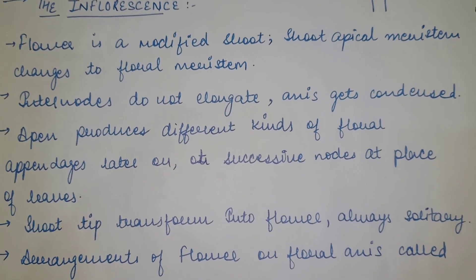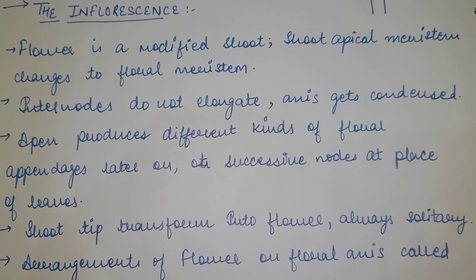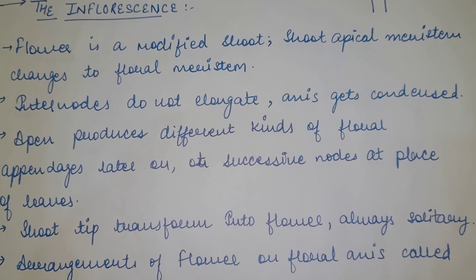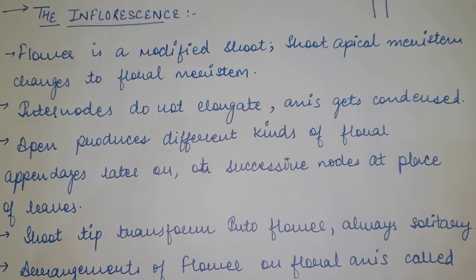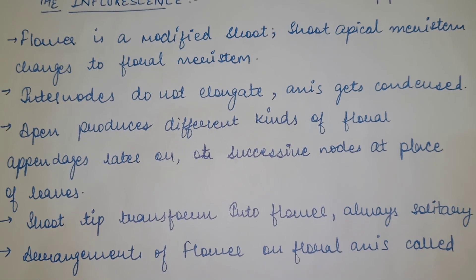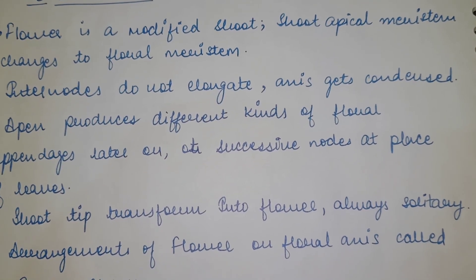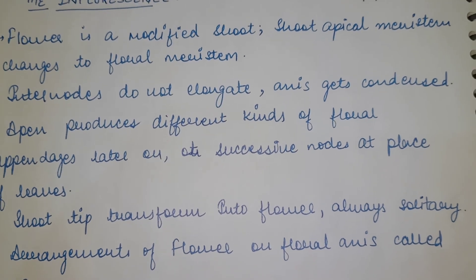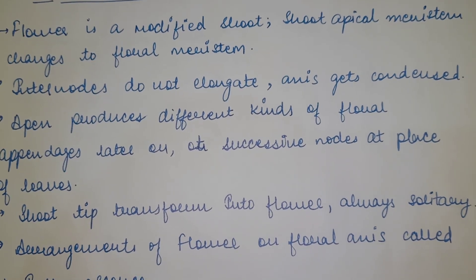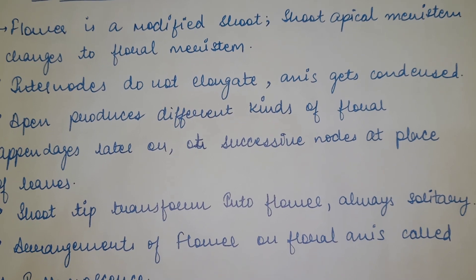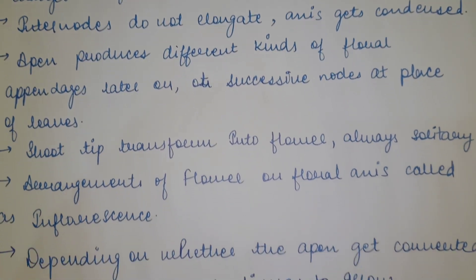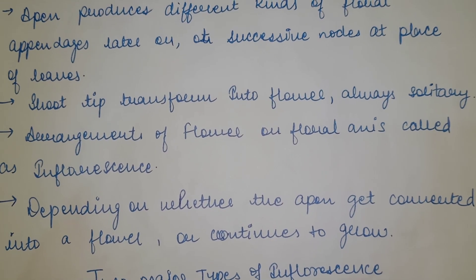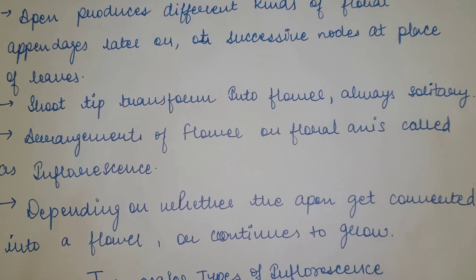When we plant a seed, a small plantlet emerges, and as the plant grows, after some time the tip of the plant starts producing flowers. First there is an apical meristem, and then later on it becomes the floral meristem. So the shoot tip gets transferred into a flower.